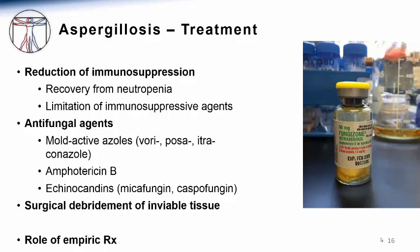The echinocandin class of antifungals, such as caspofungin, micafungin, and anidulafungin, also inhibits the growth of Aspergillus species. These agents inhibit the enzyme that makes a key structural carbohydrate in the fungal cell wall, beta-1,3-glucan. Since cell walls are not present in mammals, these drugs have excellent safety profiles. However, some studies suggest that the echinocandins may not be as effective as the azoles or Amphotericin B in treating invasive Aspergillosis. Additionally, the treatment of this infection may require surgical debridement of infected tissue for complete cure.